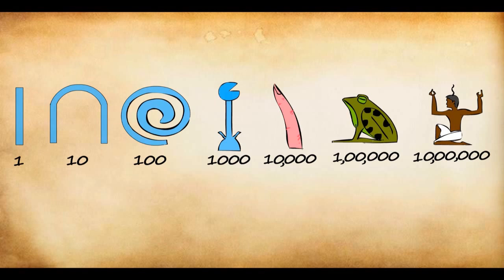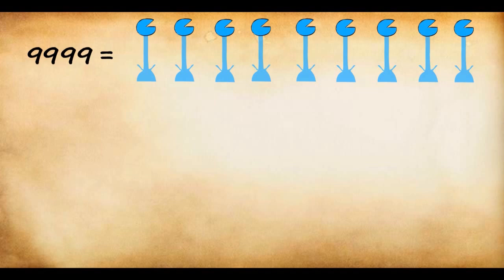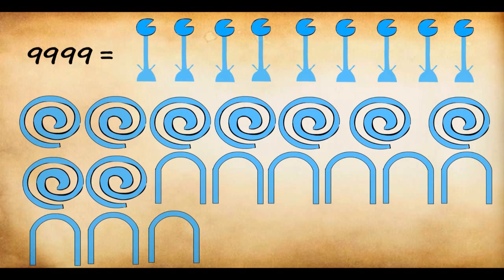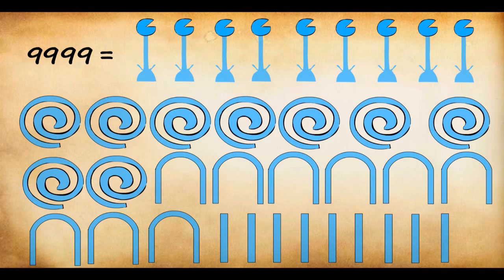So if they want to write the number 9999, they used 9 thousands that is 9 lotus to represent 9000, 9 coiled ropes to represent 900s, 9 horseshoe to represent 9 tens, and 9 rods to represent 9 ones. Now you can see that the problem here was that these numbers took a whole lot of space and time.